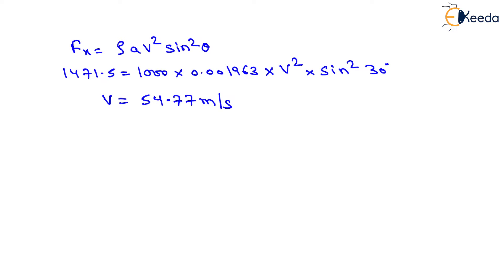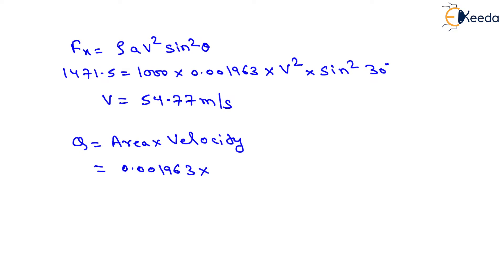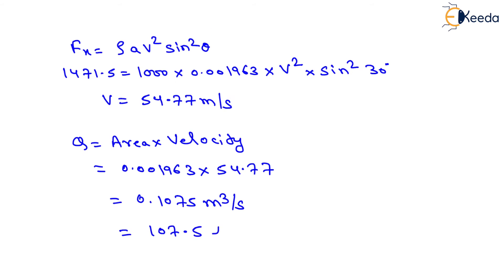Now we calculate the discharge, or rate of flow of water, which equals area into velocity. The cross-sectional area is 0.001963 meter square and velocity is 54.77 meter per second. After multiplying both values, we get discharge equals 0.1075 meter cube per second. Converting to liter per second by multiplying by 1000, it becomes 107.5 liters per second.